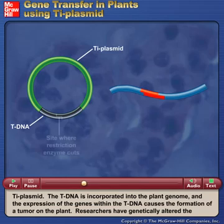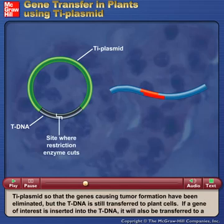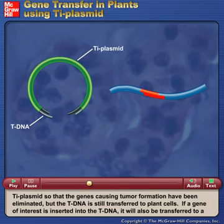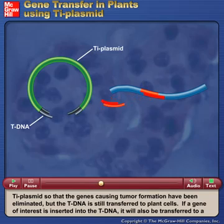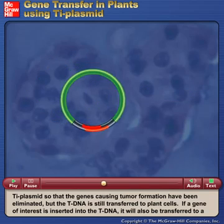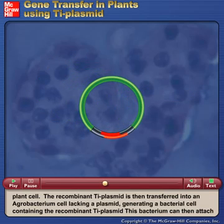Researchers have genetically altered the Ti plasmid so that the genes causing tumor formation have been eliminated, but the T-DNA is still transferred to plant cells. If a gene of interest is inserted into the T-DNA, it will also be transferred to a plant cell.